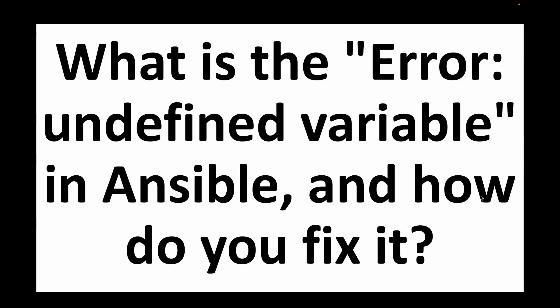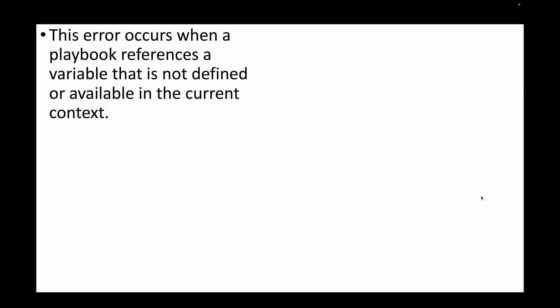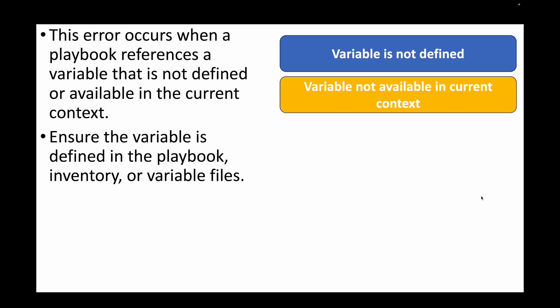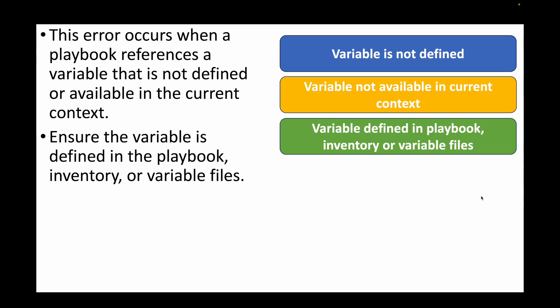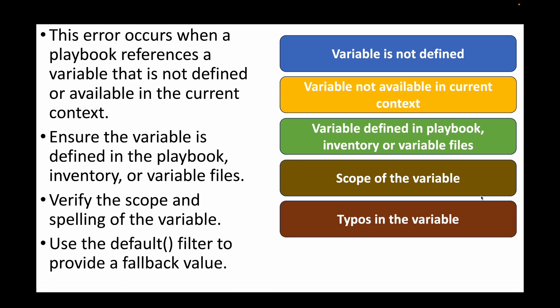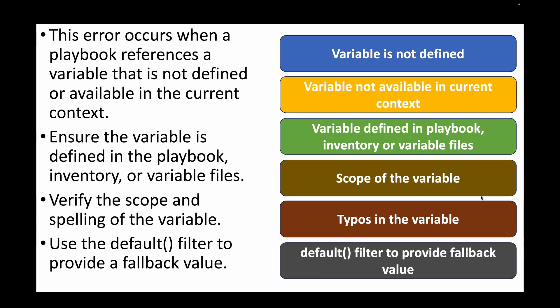The next question is: what is the error 'undefined variable' in Ansible and how do you fix it? This error generally occurs when we are trying to refer to a variable that is not defined, or the variable is not available in the correct context. Ensure the variable is defined in the right place — inside the playbook, the inventory file, or a separate variable file. Verify the scope of the variable, whether local or global, check for typos in the variable name, and use the default filter to provide a fallback value if the variable is not declared.